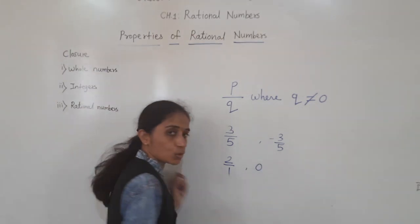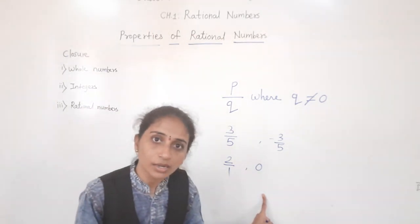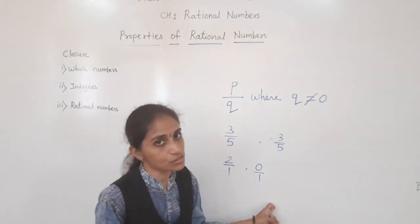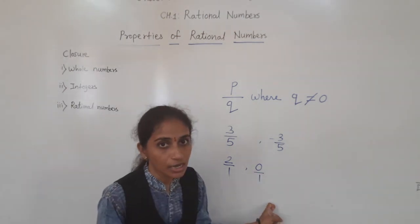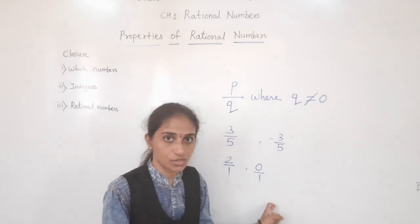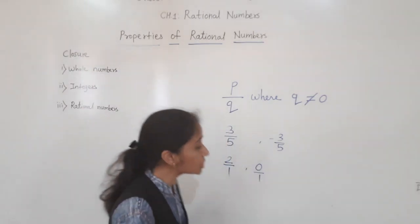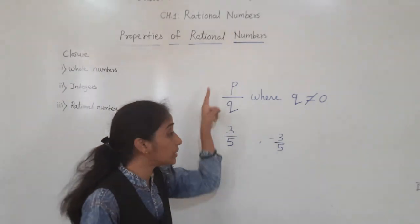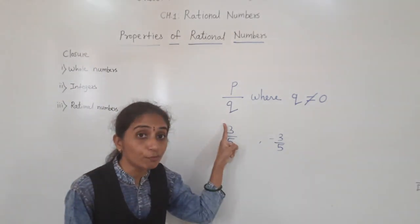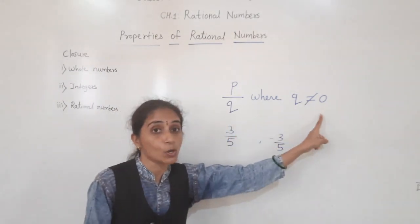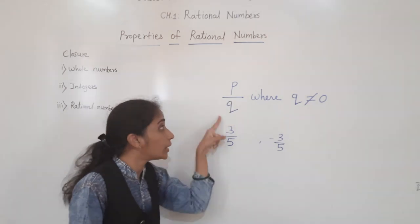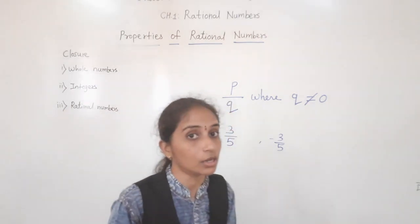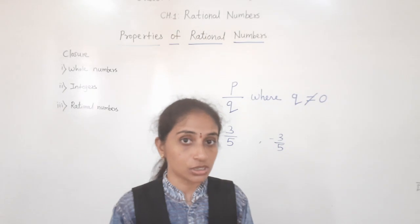Also, 0 is a rational number, because we can write it as 0 upon 5 — this is called a rational number. So, rational numbers are the numbers which we write in the form of P upon Q, where Q is not equal to 0. The denominator should not be 0 — all such numbers are called rational numbers.